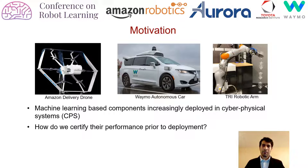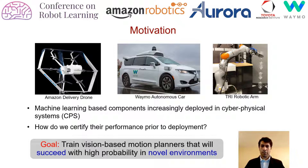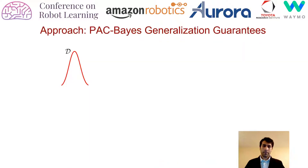This paper addresses this overarching challenge in the domain of robotics. In particular, in this paper, we train vision-based motion planners that are accompanied by guarantees that ensure that the robot will succeed with high probability when it is deployed in novel environments that were not seen during training. We achieve this using the PAC-based generalization guarantees.